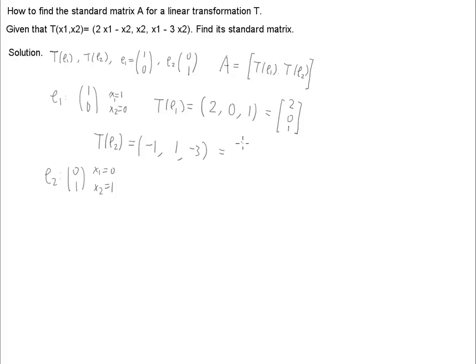All right. And then, of course, we rewrite this in the vector form. It's (-1, 1, -3).